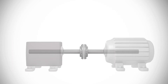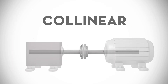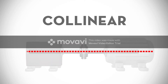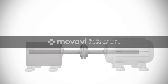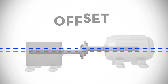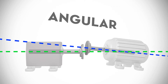If two shafts are perfectly aligned, they are said to be collinear. Collinear means that a single straight line will define the center of both shafts. Of course, this is almost never the case in the field. Shafts are usually out of alignment, with the misalignment taking two forms: offset misalignment and angular misalignment.